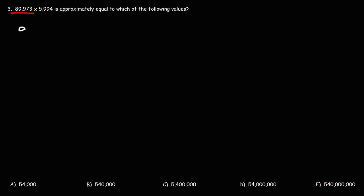So, we could round the first number to 90,000. 89,973 is approximately 90,000. The second number, 5,994, we could round that to 6,000 because it's very close to it. So, now, let's multiply 9 by 6. 9 times 6 is 54.